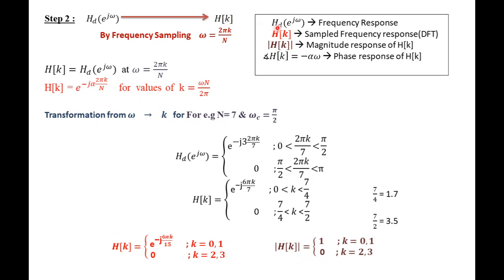In summary: HD(e^jω) is the desired frequency response, H(k) is the sampled frequency response (DFT) obtained in Step 2, and |H(k)| is the magnitude response. The frequency response also contains a phase component given as −αω, i.e., e^(−jαω), where αω is the phase response. The phase is linearly dependent on ω, which is why these are called linear phase FIR filters.